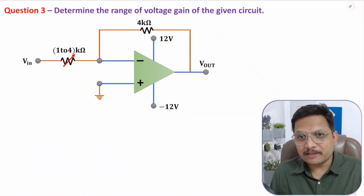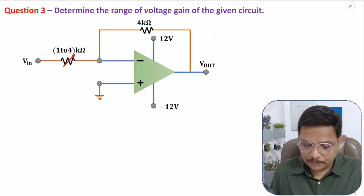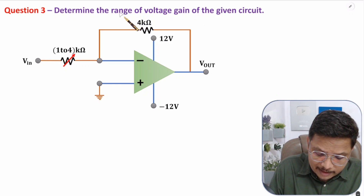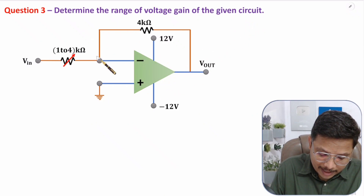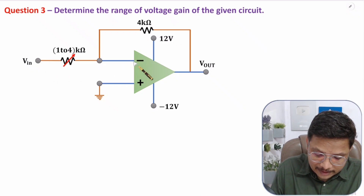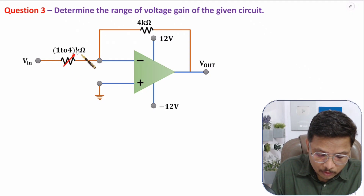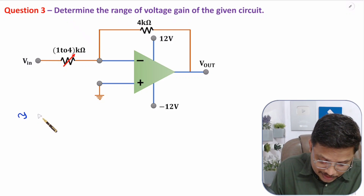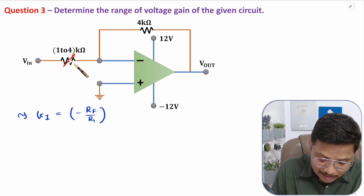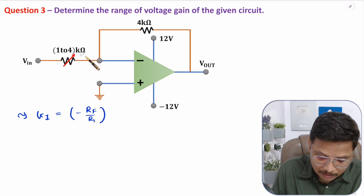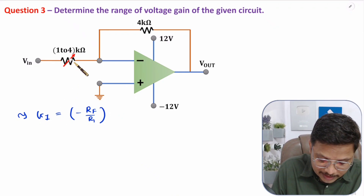With the third question, let us increase the complexity a bit. We are required to find the range of voltage gain for a given circuit. We have negative feedback and input is given at the inverting terminal. This resistance is varying from 1 to 4 kilo ohm. So the gain equation for inverting configuration is minus RF by R1, and as R1 varies, the gain also changes.